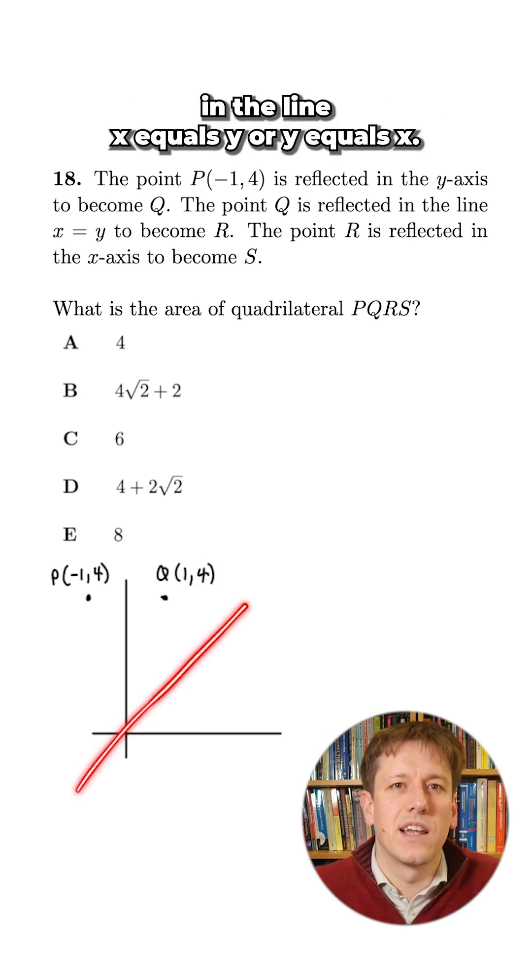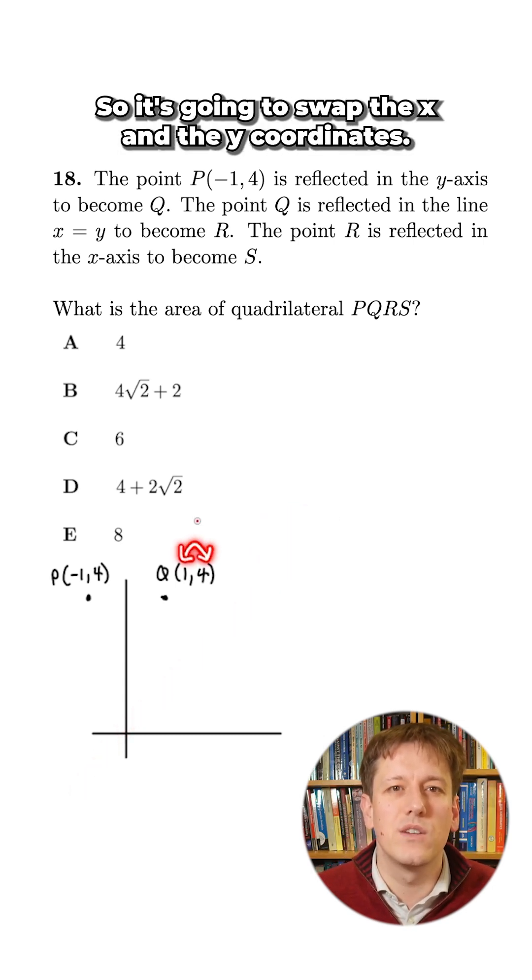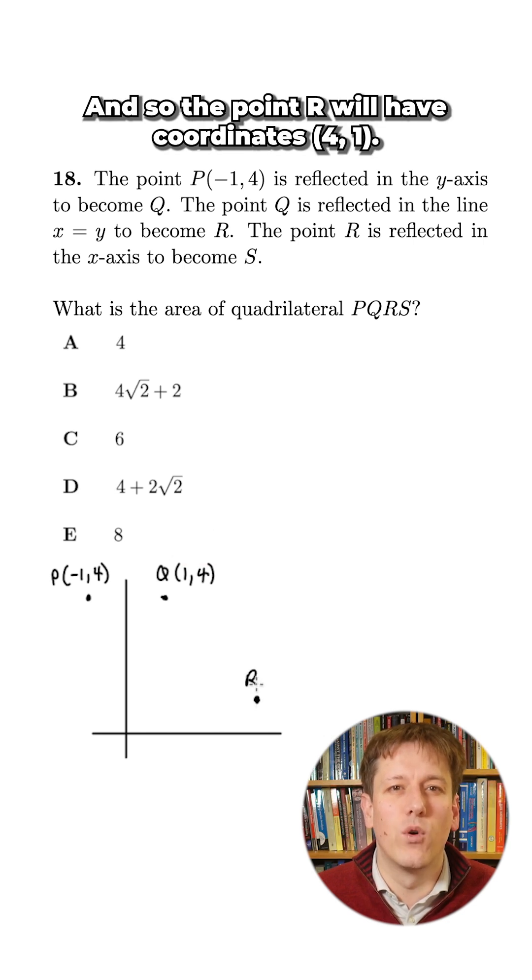Now I'm going to reflect in the line x equals y or y equals x and when you reflect in the line y equals x that swaps the role of x and y. So it's going to swap the x and the y-coordinates and so the point R will have coordinates 4, 1.